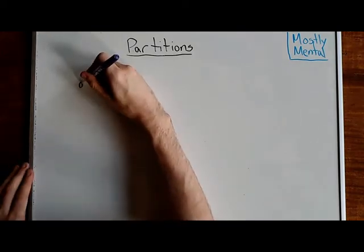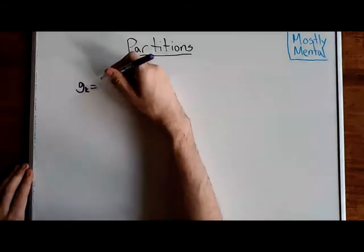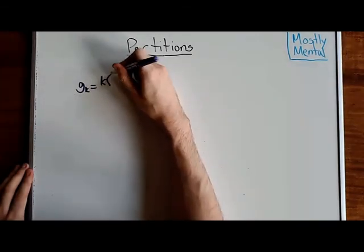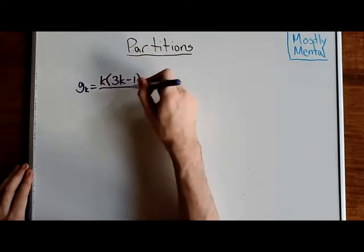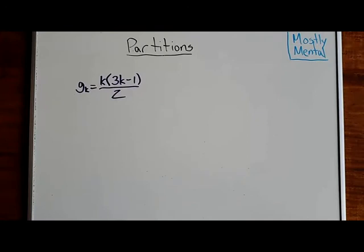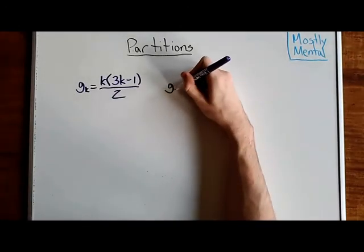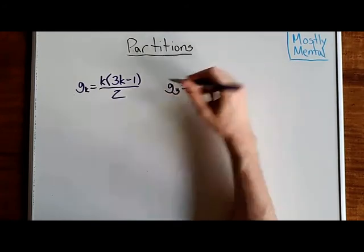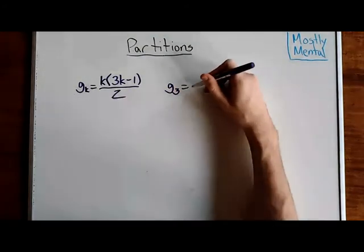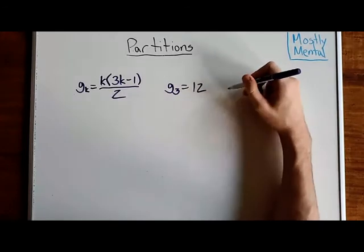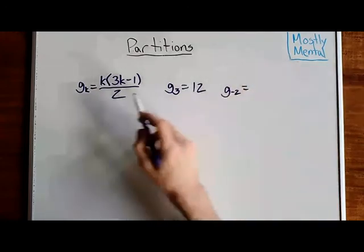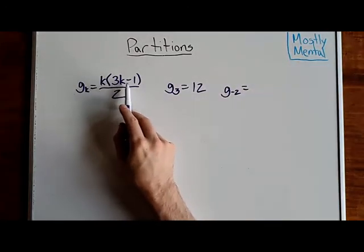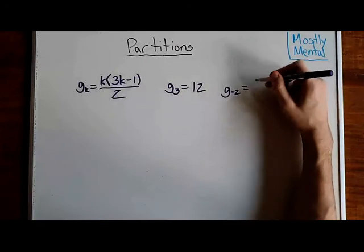So, the generalized pentagonal numbers are numbers of the form g sub k is k times 3k minus 1 over 2 for any integer k, positive, negative, or 0. So, for k equals 3, we have g of 3 equals 3 times 8 over 2, which is 12. And for k equals negative 2, we have g of negative 2 is negative 2 times negative 7 over 2, which is 7.